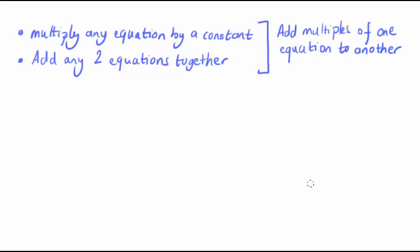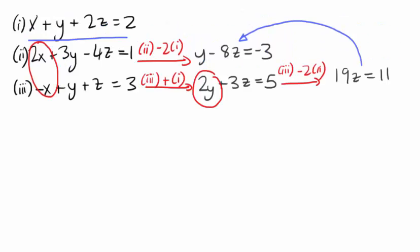Notice that these operations don't affect the variables. They only affect the coefficients. And so it's convenient to collect the coefficients together in a table or an array. I'm going to do that for the set of three equations here.